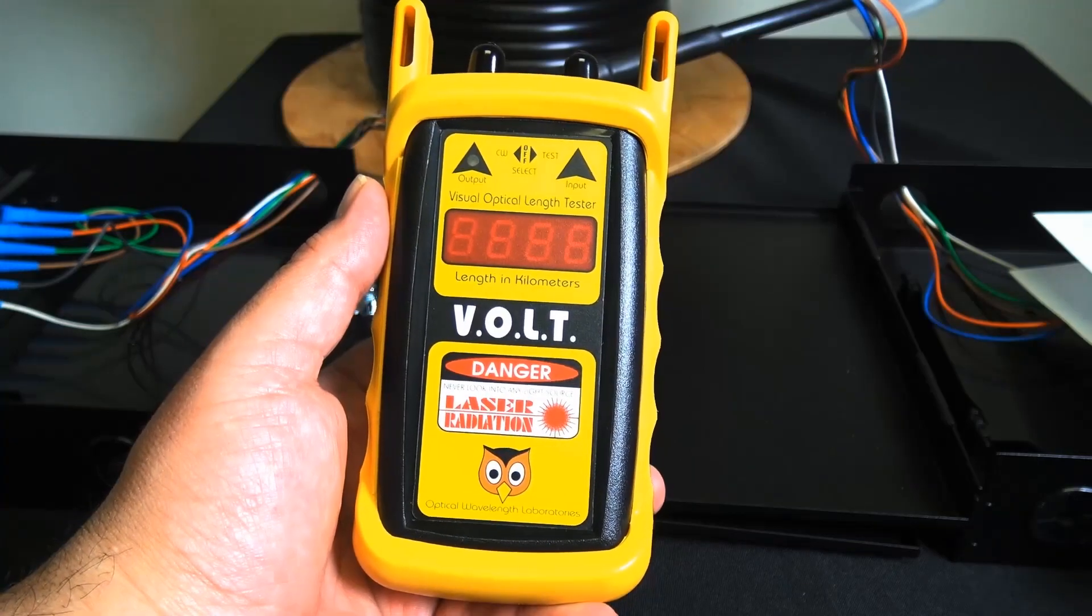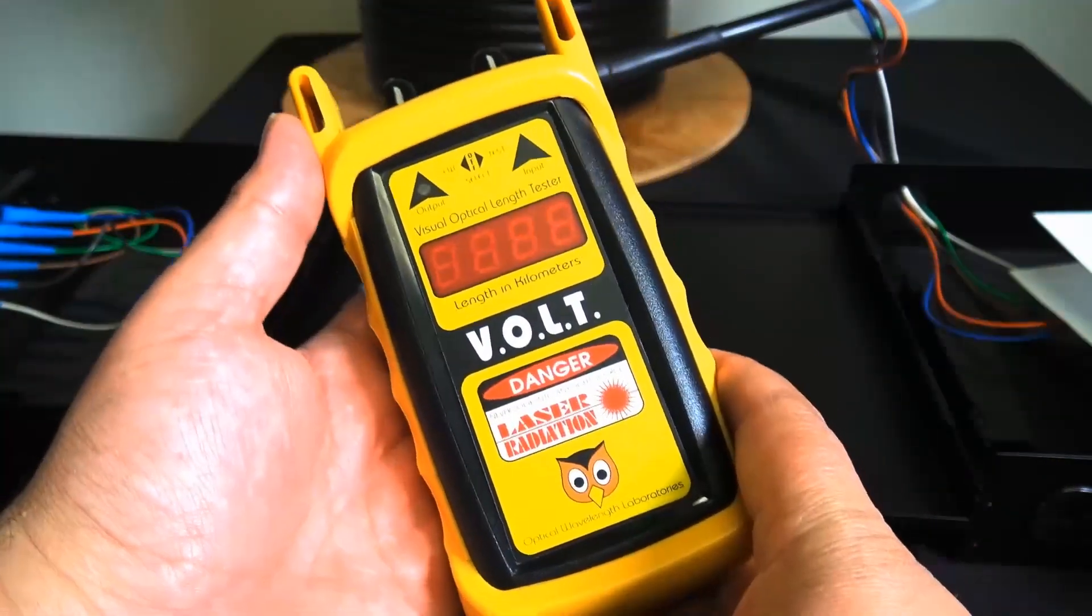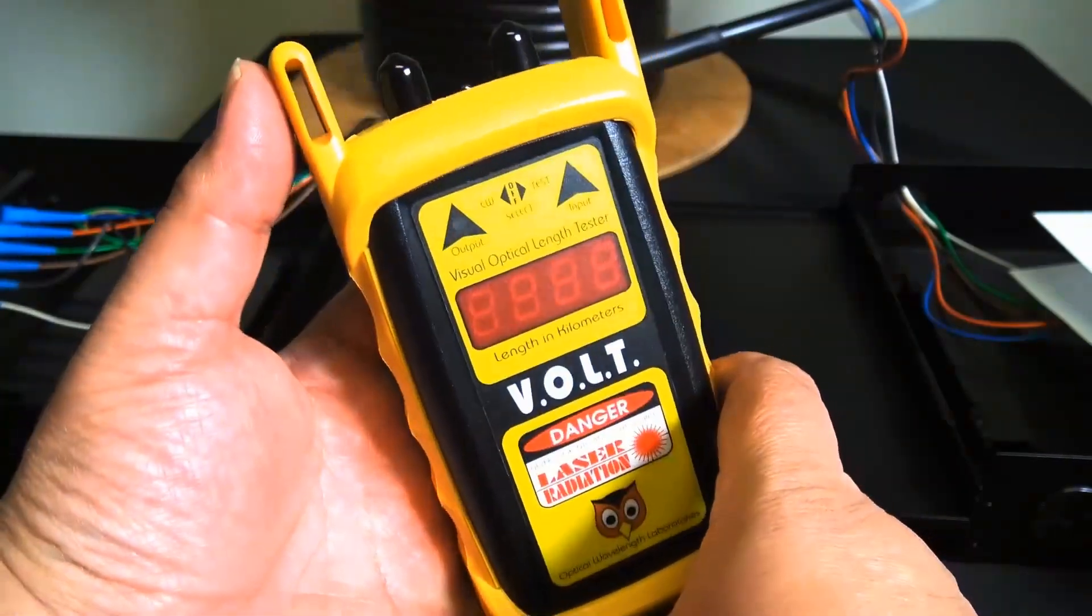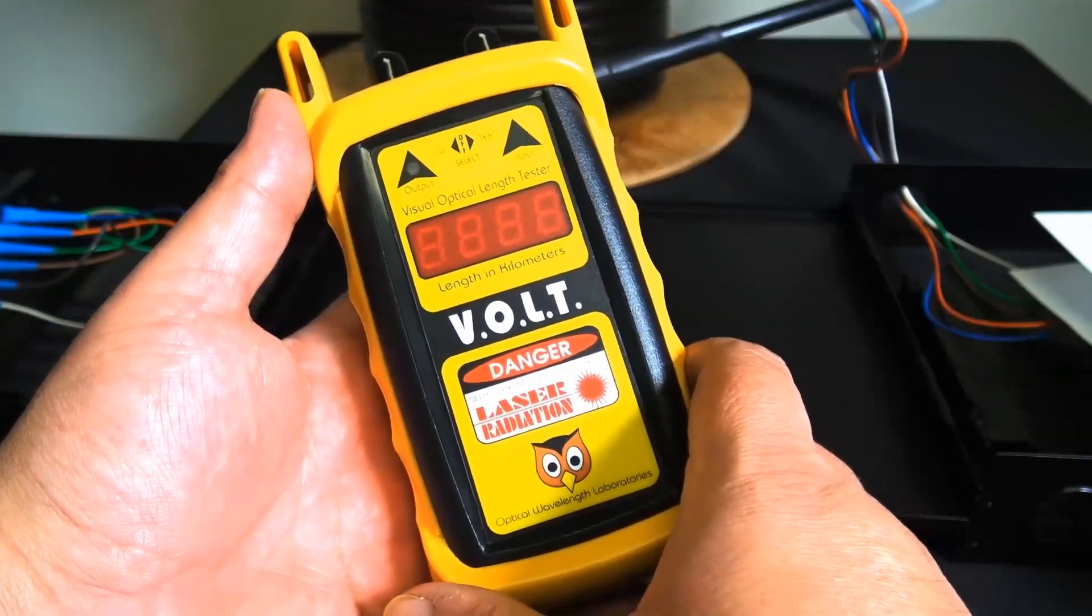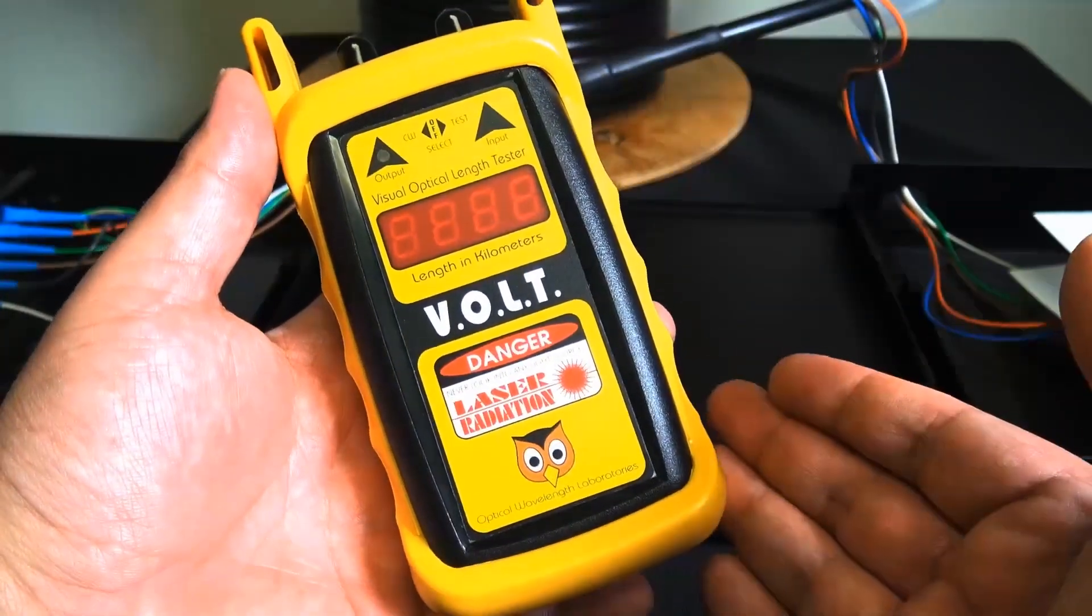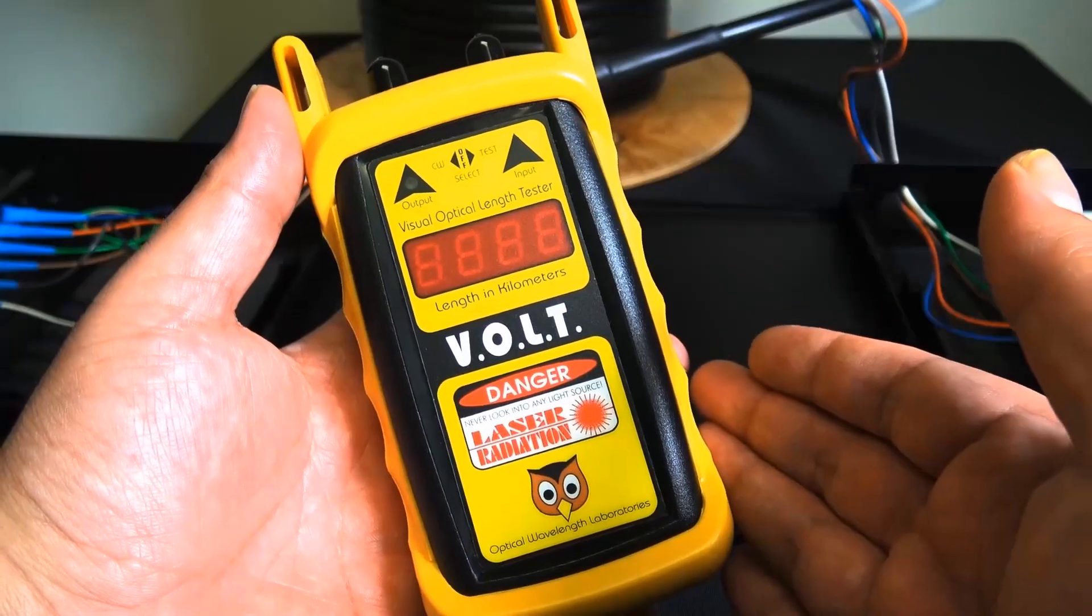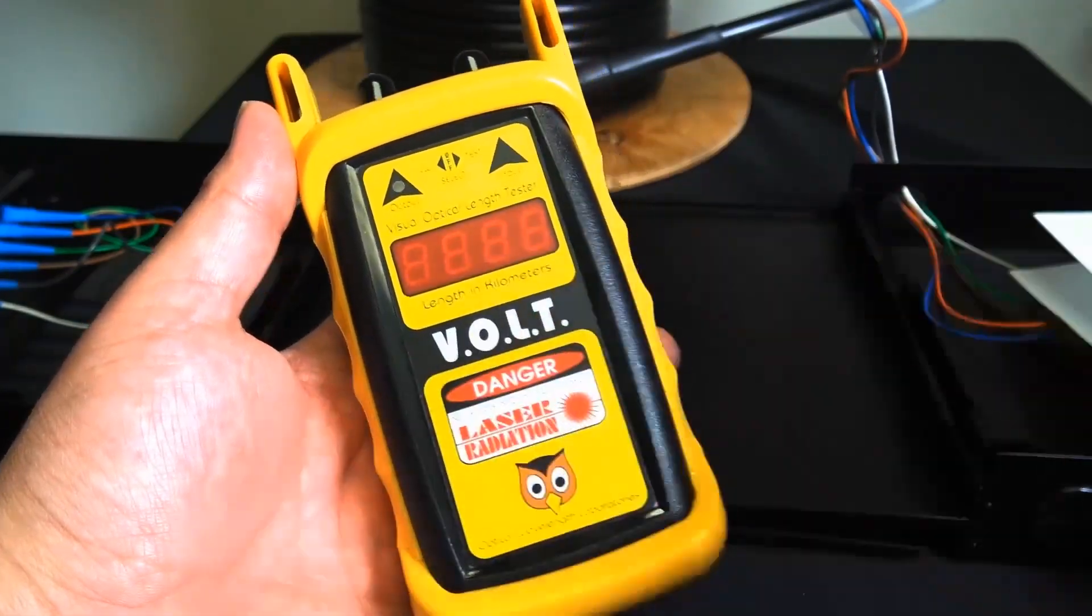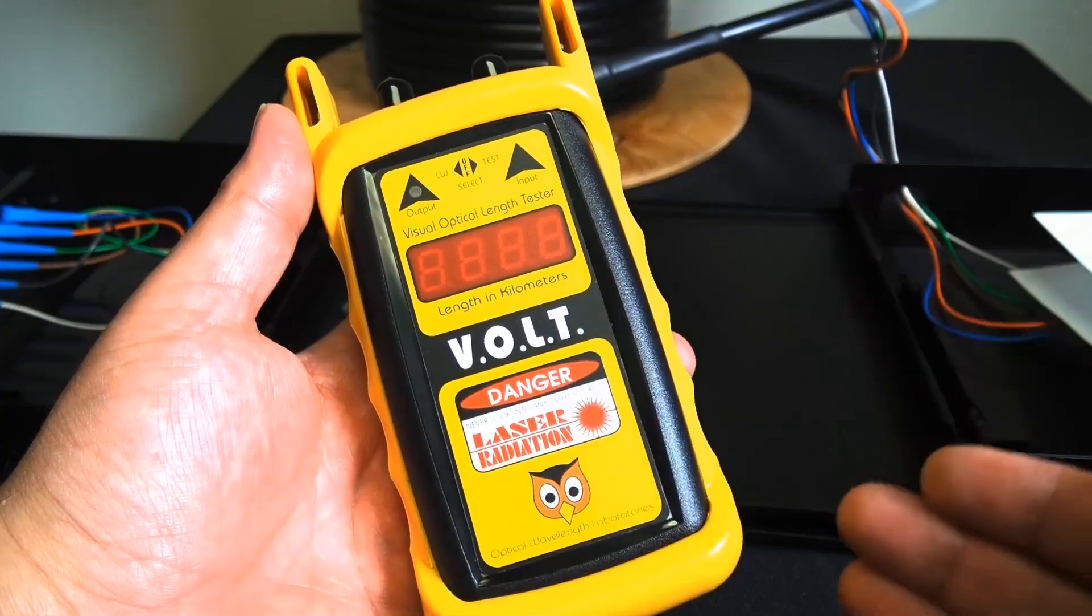How to measure fiber optic cable. Now, we're going to do that by using this tool by OWL, Optical Wavelength Laboratories. And the part number of this tool is VOLT-1, that's V-O-L-T-1. Now, this measures the length of both multi- and single-mode fiber with accuracy of 2.5 meters. And the length that this will measure is up to 1.5 kilometers.